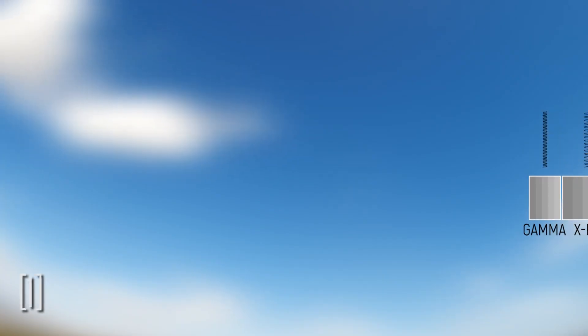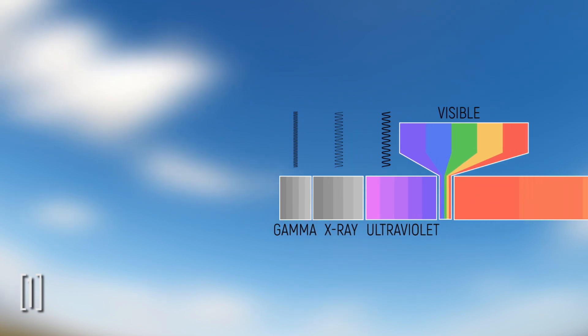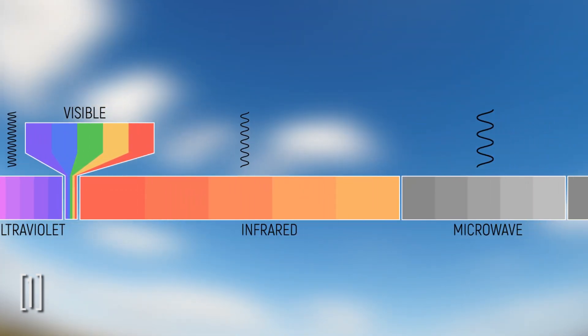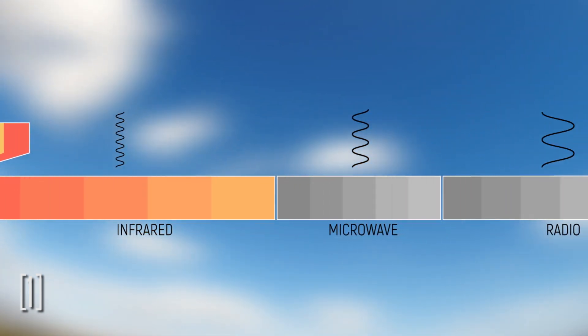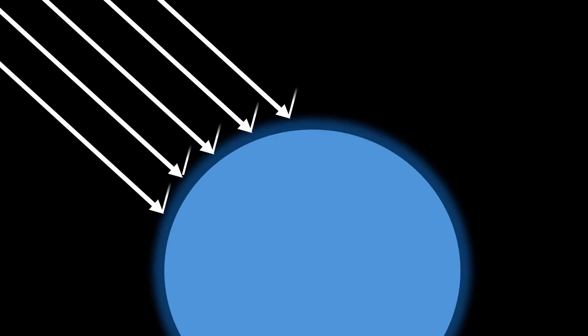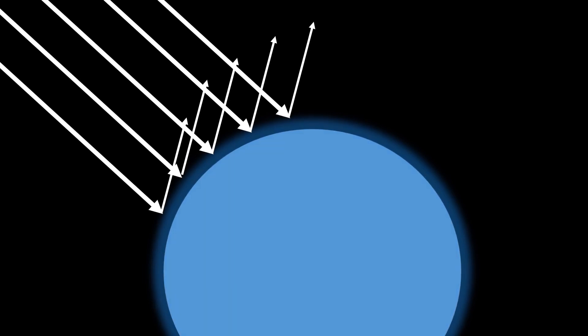Optical phenomena are made because of light, so let's start from this. Light travels through space in gamma rays, X-rays, ultraviolet, the visible spectrum, infrared, microwaves, and radio waves. The first wavelengths to be lost are gamma and X-rays. Those wavelengths are so short that they cannot penetrate the atmosphere and thus are reflected back into space.